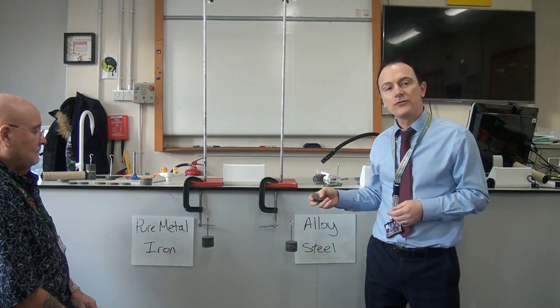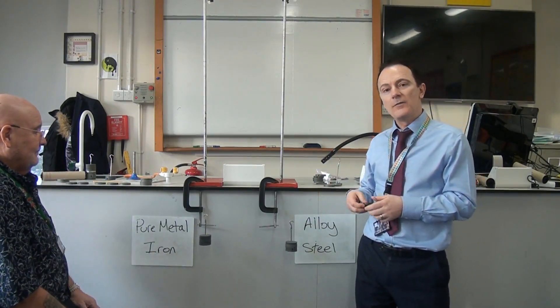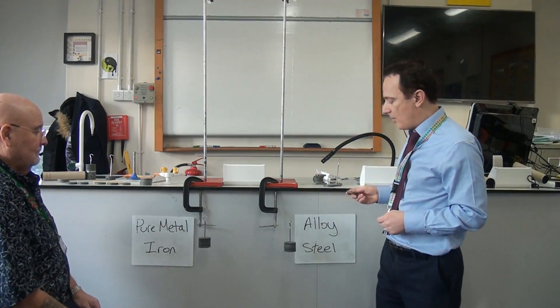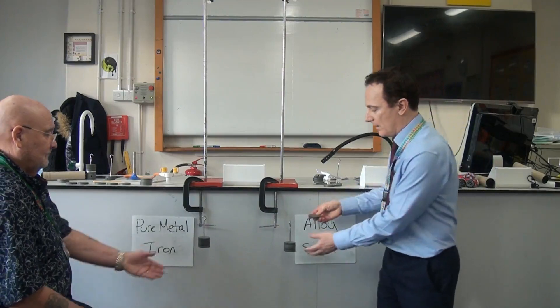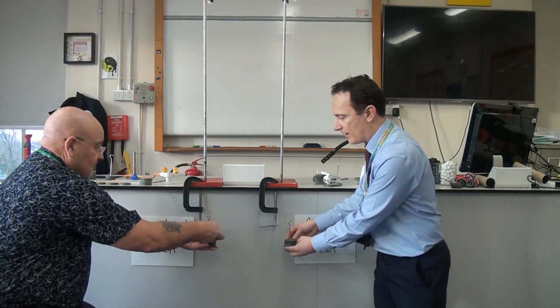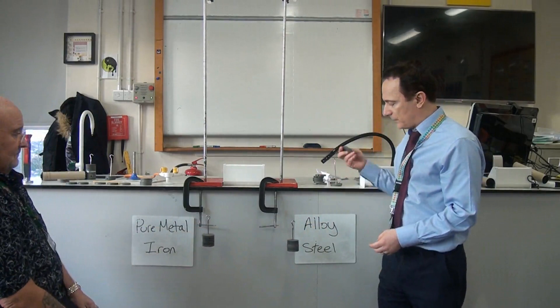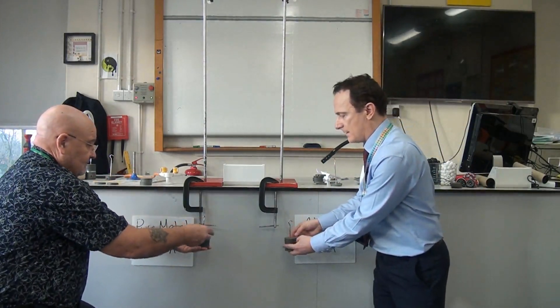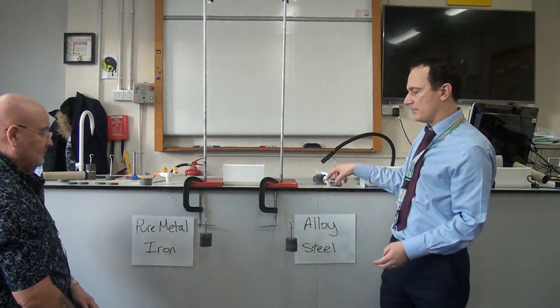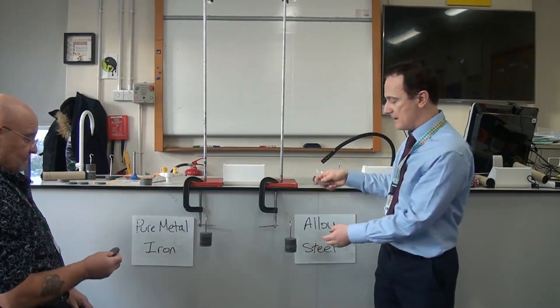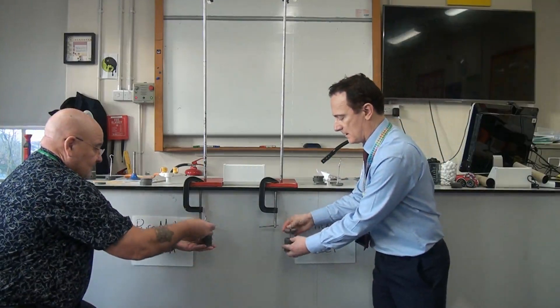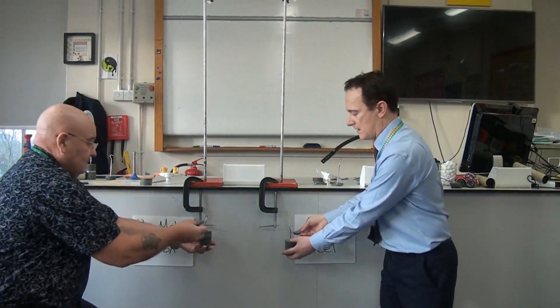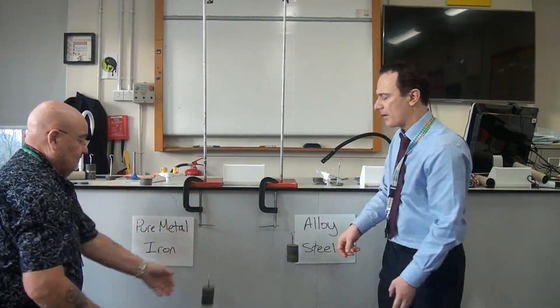We've already got 500 grams hanging down on each metal. We're going to gradually add more weight to see which is the strongest, the pure metal iron or the alloy steel. We'll have another 100 grams going on and still both are hanging in there. Now up to 700 grams, still no sign of any of them breaking. 800 grams, we've now got 900 grams going on.